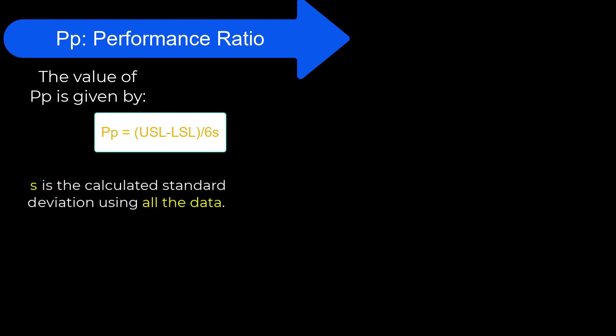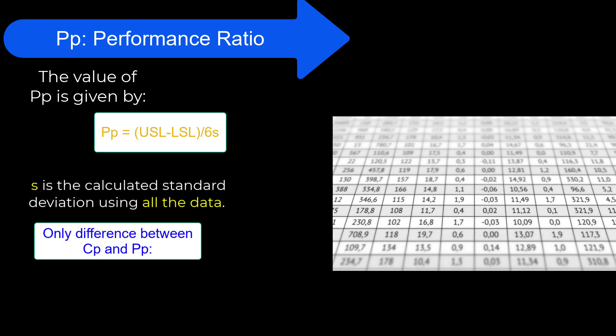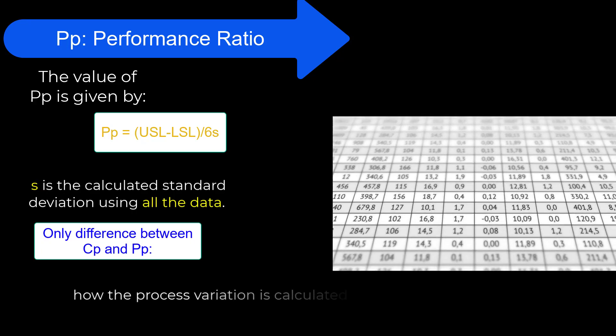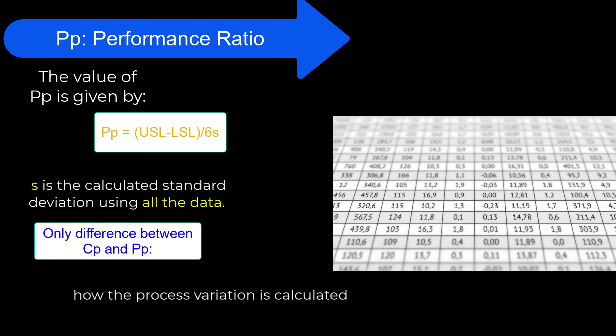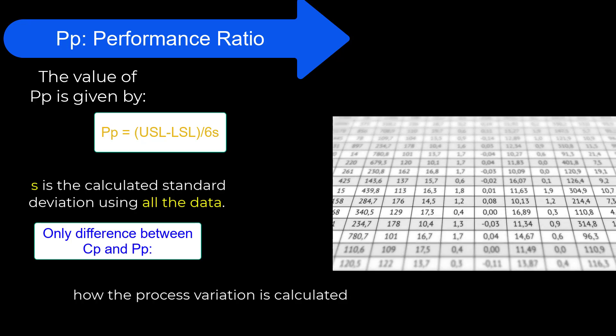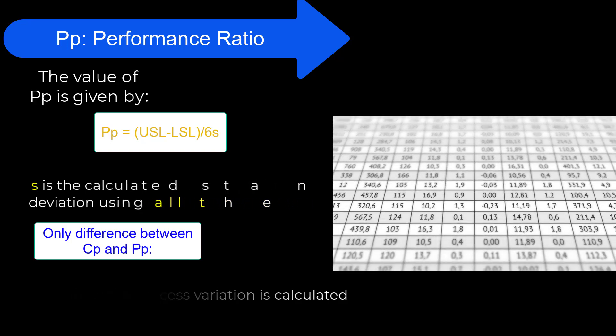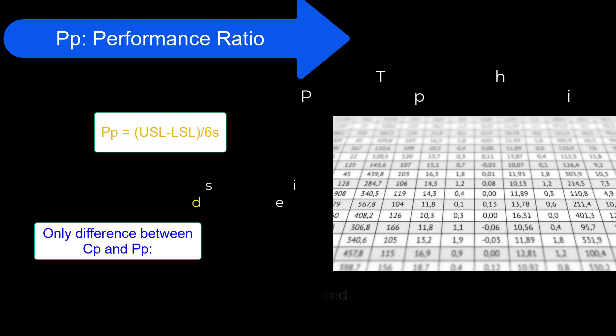The performance ratio PP is very similar to the capability ratio. It's given by the upper spec minus the lower spec — the room the specification provides — divided by six times S, where S is the calculated standard deviation using all the data. So the only difference between CP and PP is how the process variation is calculated. The performance ratio uses the calculated standard deviation S using all the data.